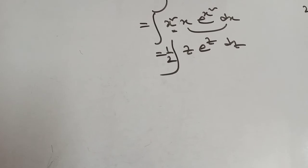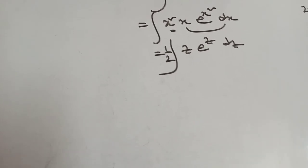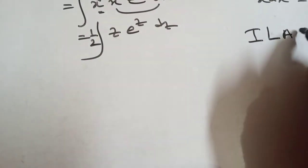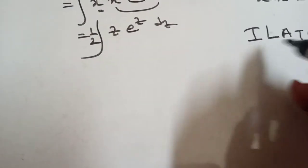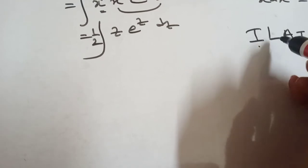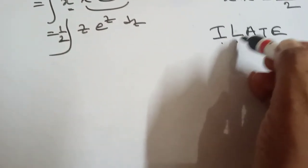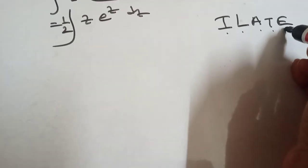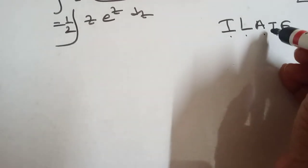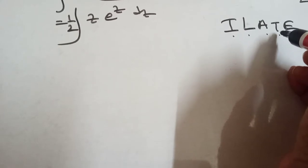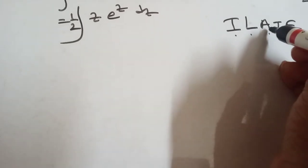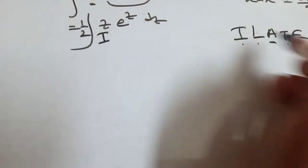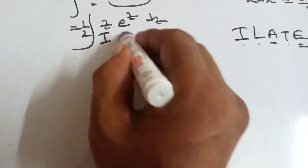Now apply integration by parts. By ILATE: I means inverse, L means log, A means algebra, T means trigonometry, E means exponential — whichever comes first is the first function and the other is the second function. Here algebra is the first function and exponential is the second function.